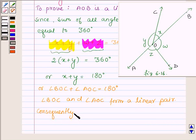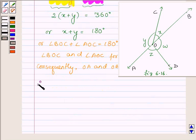Consequently, OA and OB are opposite rays. Therefore, AOB is a straight line.